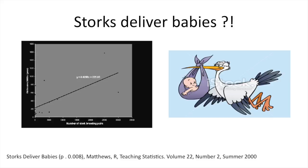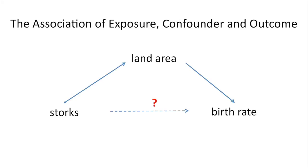Here is an example of confounding. We have data from several European countries showing the number of stork breeding pairs versus the birth rate, and there is a correlation between them. Does the stork deliver the babies? We know that's not true, but the statistic seems like it is. That's confounding — something else distorts this relationship. In this case it was land area: countries with large land area had more space for storks, and those large countries also had a higher birth rate. When the analysis adjusted for this confounder, the association between storks and birth rate disappeared.